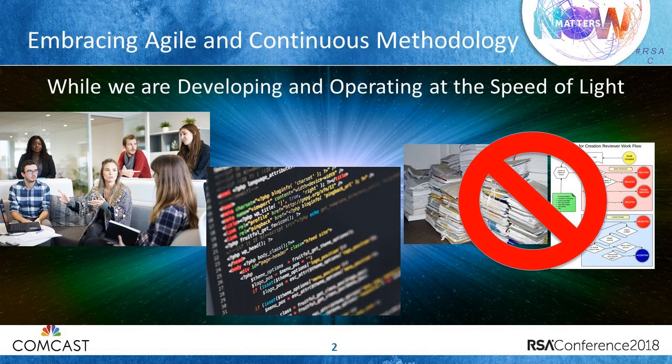The core principles of the Agile methodology manifesto include valuing individuals and interactions over processes and tools, valuing working software, products, and systems over comprehensive documentation. You can already see where we're starting to go with these threat models.